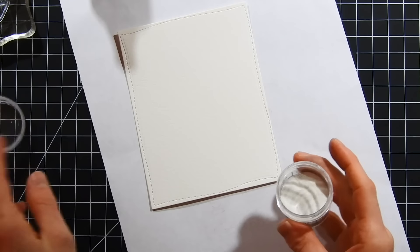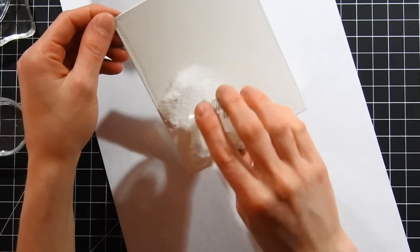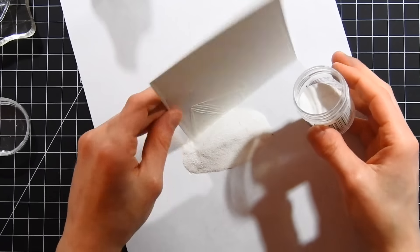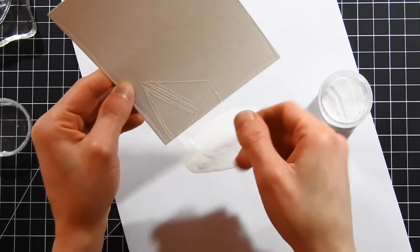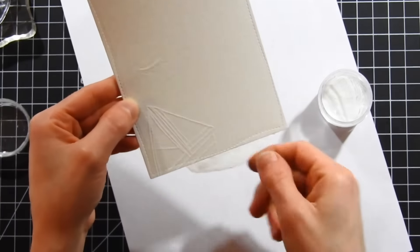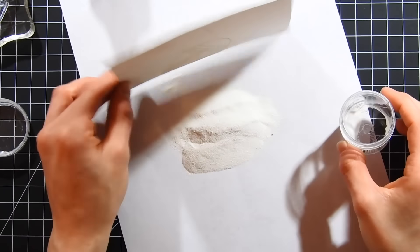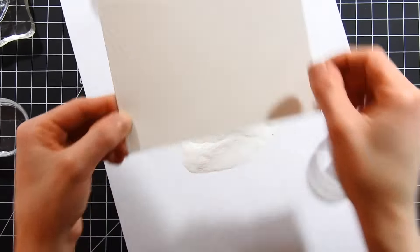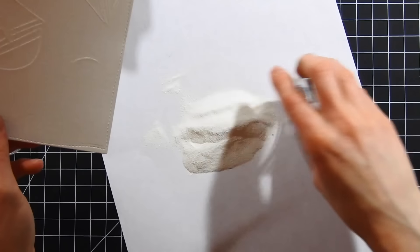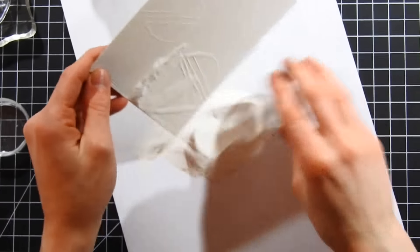After I've stamped the sailboat, I'm gonna go ahead and take some Ranger superfine embossing powder and sprinkle that onto the sailboat. I like Ranger superfine embossing powder because it really holds on to the details of your stamped images very nicely. When you heat emboss with superfine embossing powder, you definitely notice the added quality to your embossed image.